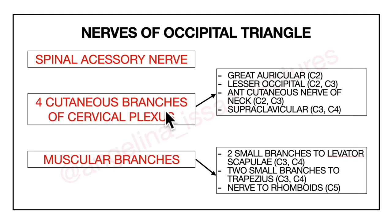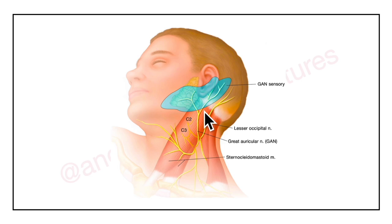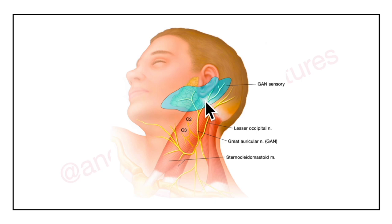Next we will learn about the four cutaneous branches of the cervical plexus: the greater auricular nerve, lesser occipital, anterior cutaneous nerve of the neck, and supraclavicular nerves. The greater auricular nerve is the largest ascending branch of the cervical plexus. It ascends on the sternocleidomastoid muscle and reaches the parotid gland where it divides into anterior and posterior branches. The anterior branch supplies the lower one-third of the skin on the lateral surface of the pinna and the skin over the parotid gland. The posterior branch supplies the lower one-third of the skin on the medial surface of the pinna.